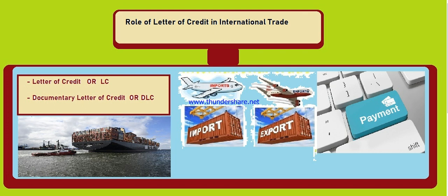The role of letter of credit in international trade is to provide safe and secure payments for the importer and safe and secure goods for the exporter. Now both parties — exporter and importer — trust each other because the bank is a guarantor between them. However, this is not the only payment method; there are other payment methods we will discuss later, but the main, safe, and secure method of payment is through letter of credit or LC.